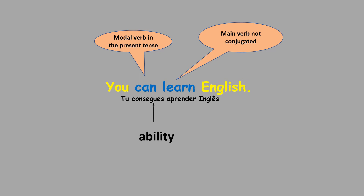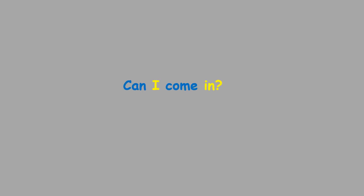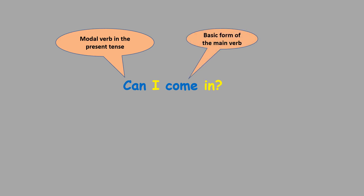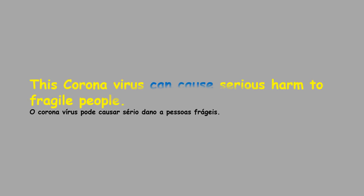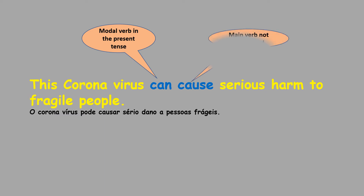You can learn English — you are capable of learning English. Can I come in? As it is a question, the modal verb in the present tense is in the first position. 'Come' is the basic form of the main verb and here you are asking for permission. This coronavirus can cause serious harm to fragile people. 'This coronavirus' is the subject, 'can' is the modal verb in the present tense, 'cause' is the main verb and it is not conjugated — you are expressing a possibility.